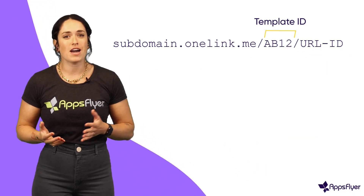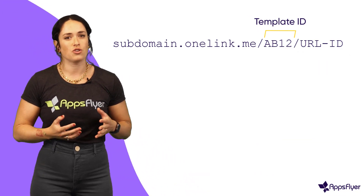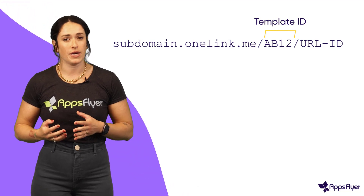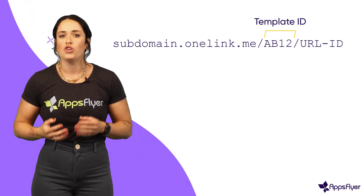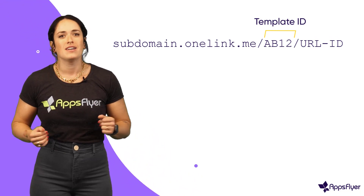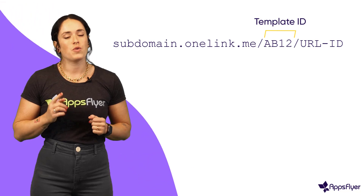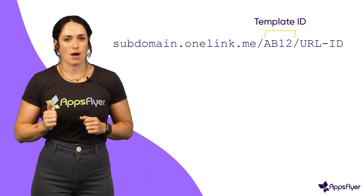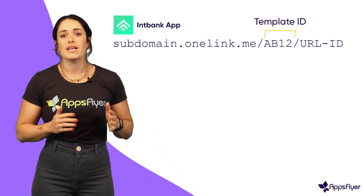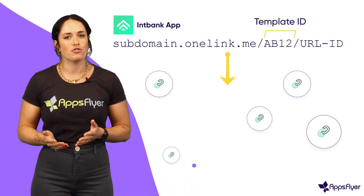Before you create actual links or QR codes to be inserted into your campaigns or ads, you need to create a template. Usually, you only need one template per app to generate as many links as you want for all your different advertising campaigns.